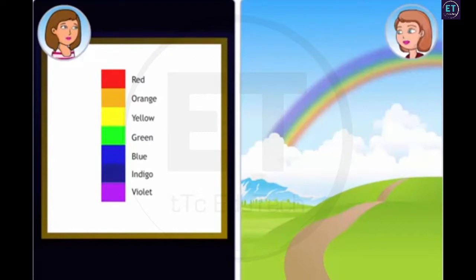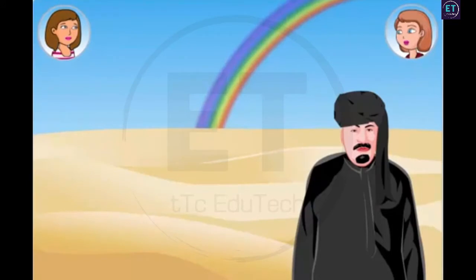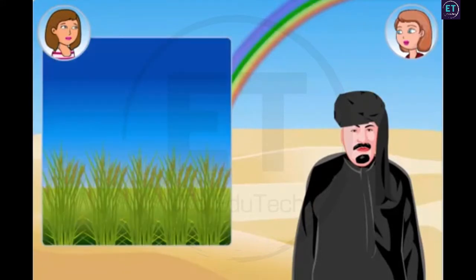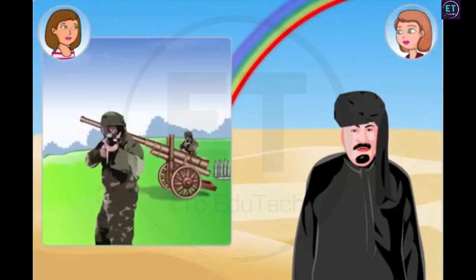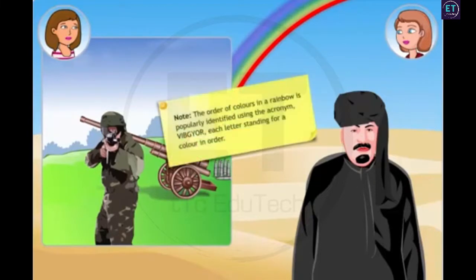I see what you mean by creating a rainbow through a prism now. To Iranian Muslims, even the brilliance of the colors in a rainbow is significant. For example, prominent green means abundance, red means war, and yellow brings death. Note, the order of colors in a rainbow is popularly identified using the acronym VIBGYOR, each letter standing for a color in order. The same order of colors is visible in a rainbow.